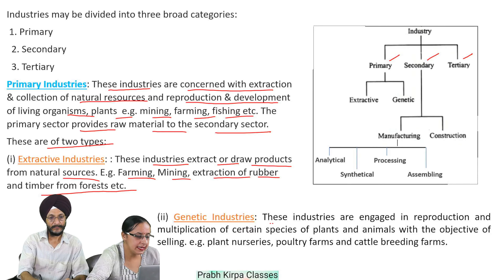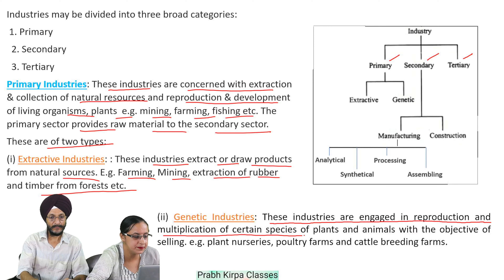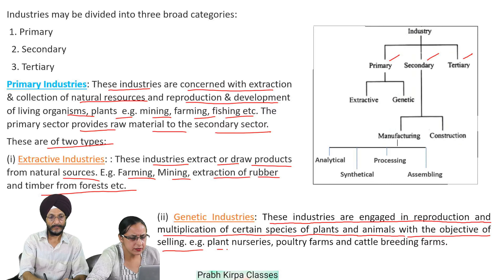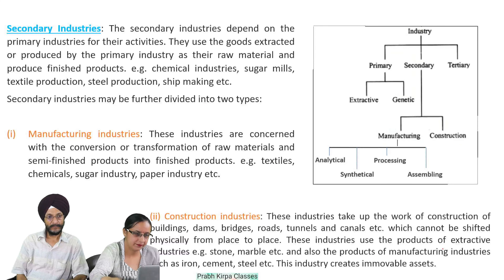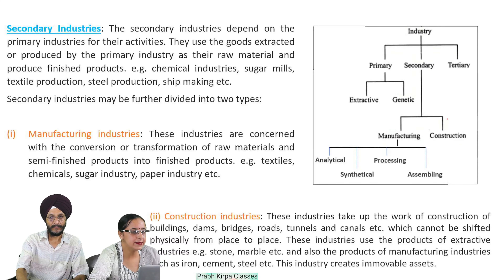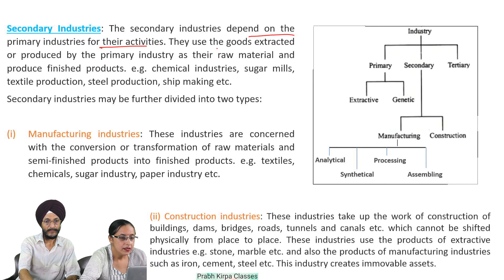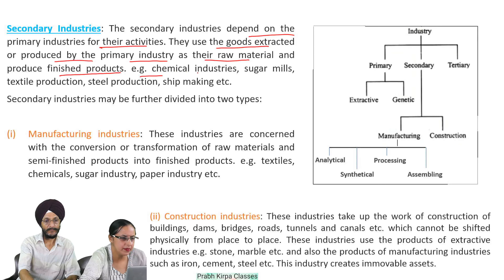Second, genetic industries: these industries are engaged in reproduction and multiplication of certain species of plants and animals with the objective of selling. Examples include plant nurseries, poultry farms, and cattle breeding farms. Secondary industries depend on the primary industries for their activities — they use the goods extracted or produced by the primary industry as their raw material and produce finished products. For example, chemical industries, sugar mills, textile production, steel production, shipmaking, etc.